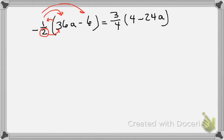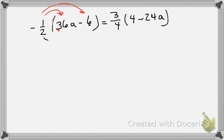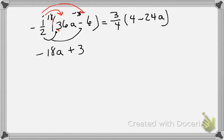It's kind of like a triangle method — I go this way then this way, dividing and multiplying wherever the numbers are located. So let me rewrite this: one negative one-half. Again, 2 goes into 36 eighteen times; 18 times negative 1 is negative 18. Then 2 goes into negative 6 — that's negative 3 — and negative 3 times negative 1 is positive 3.